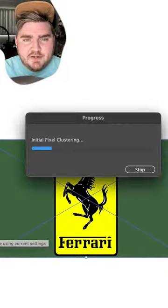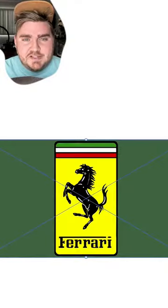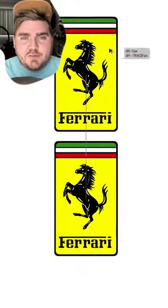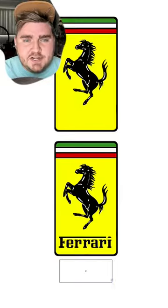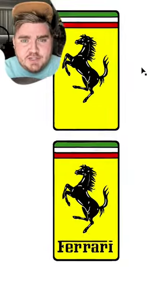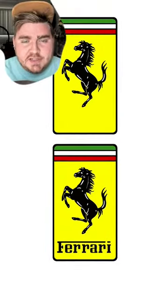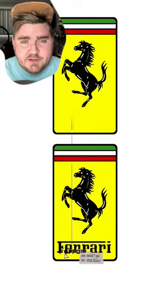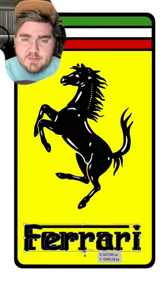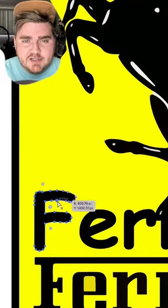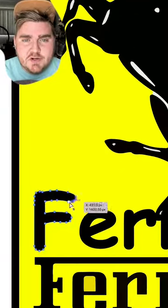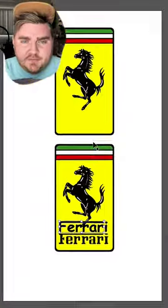Up next we have Ferrari. This one was kind of easy. First I transformed the entire logo into a vector just to get rid of this weird green thing that was there. Then I just erased the original Ferrari, typed it out in Comic Sans, and again selected those points and dragged it over to make the letters as long as they needed to be.